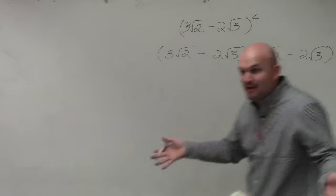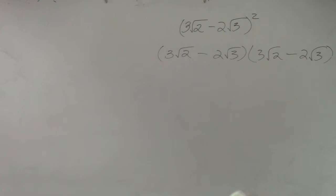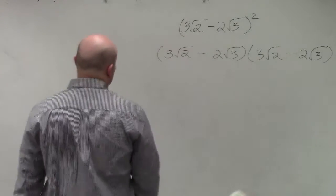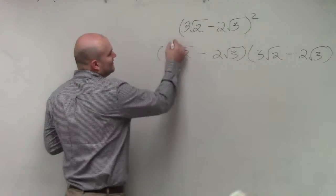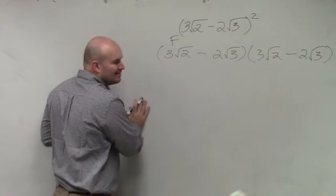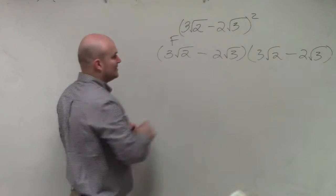You have to multiply it by itself. You cannot just distribute that square across a binomial. Just got to be very careful with that. So now we need to apply FOIL. Usually I like to do things a little bit quicker, but if you remember, this is going to maybe take a little bit of math. So I'm going to break this up using the FOIL method.